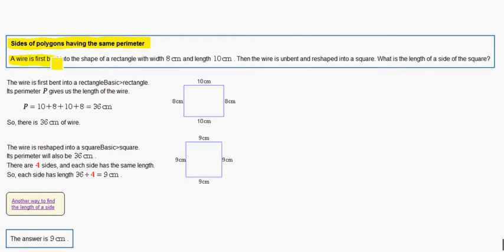A wire is first bent into the shape of a rectangle with a width of 8 centimeters and a length of 10 centimeters. Then the wire is unbent and reshaped into a square. What is the length of a side of the square?